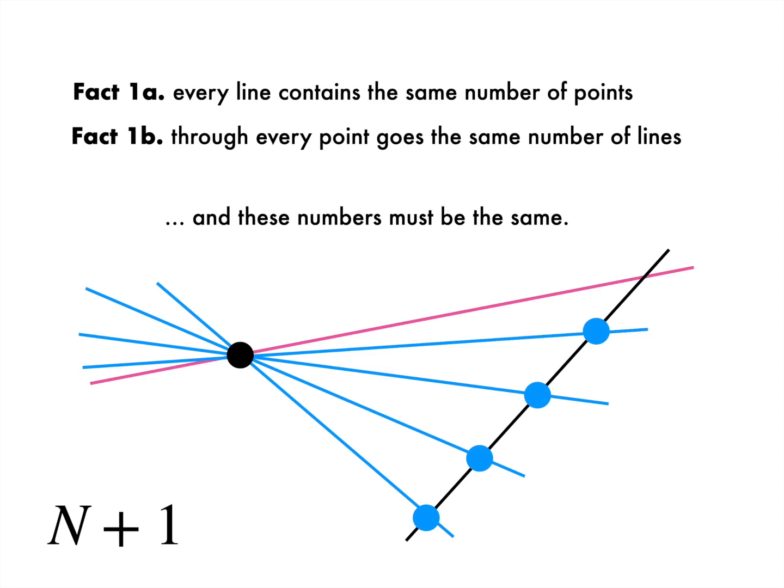Similarly to before, there can't be any more lines going through this point because if there were, it would generate another point on the first line. But there's no such thing. As a result, the number of points on that line is the same as the number of lines through the exterior point.